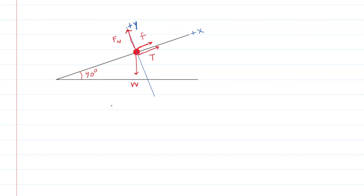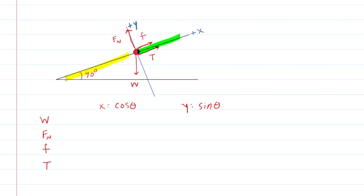The next thing we want to do is arrange these forces into a force table. A force table will arrange the forces in the left column, with additional columns for the x and y components of each force. For the x component, you multiply by the cosine of an angle — but please be careful. When you measure your angle, make sure you're measuring it from the positive x-axis. For instance, if we look at the weight force, we want to measure the angle to that force from the positive x-axis.